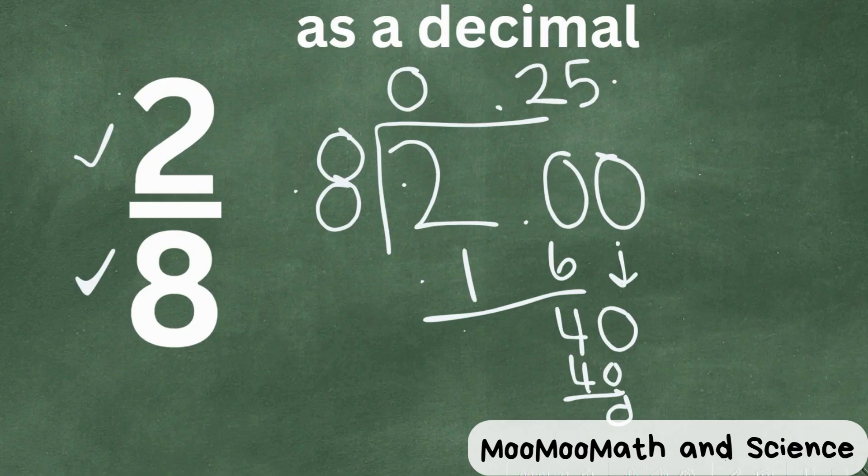So two eighths as a decimal is 0.25. I hope that was helpful.